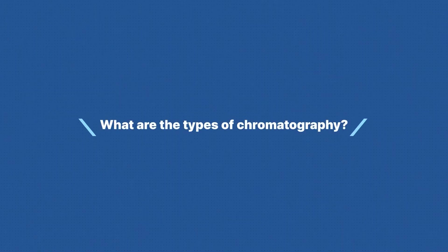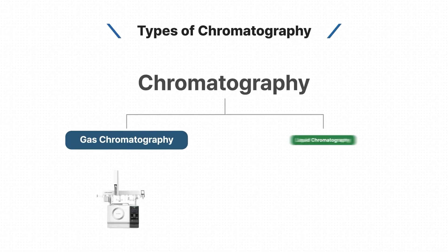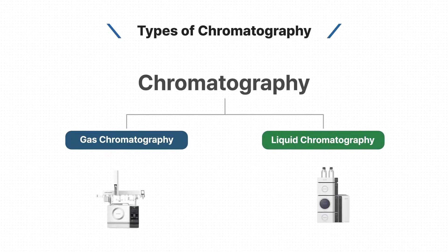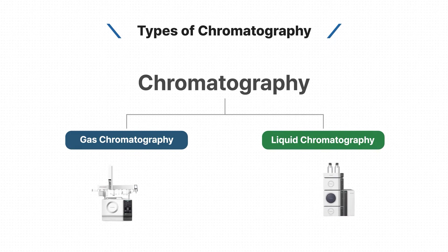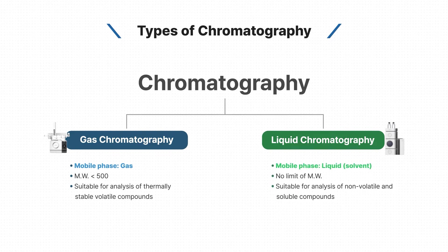What are the types of chromatography? Chromatography can be categorized into gas chromatography and liquid chromatography depending on the phase type of mobile phase used. Gas chromatography uses gas as mobile phase; compounds under 500 molecular weight can be analyzed by GC, and GC is suitable for analysis of thermally stable volatile compounds. On the other hand, LC uses liquid as mobile phase and there are no limitations of molecular weight that LC can analyze. LC is suitable for analysis of non-volatile and soluble compounds.